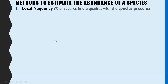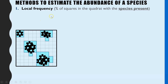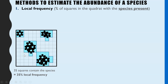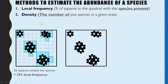The final thing is how you collect data inside quadrats. The first method is local frequency: you count the number of squares which have the species present, and because there are 100 squares you represent it as a percentage. In this example, the plant species occupies part of 35 squares, so we record a local frequency of 35 for that quadrat. You repeat 30 times, calculate a mean, and use that percentage as your estimate for the entire field.